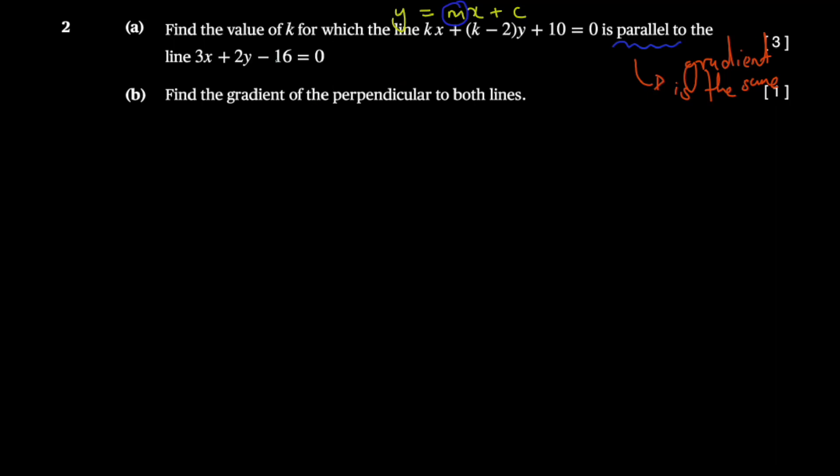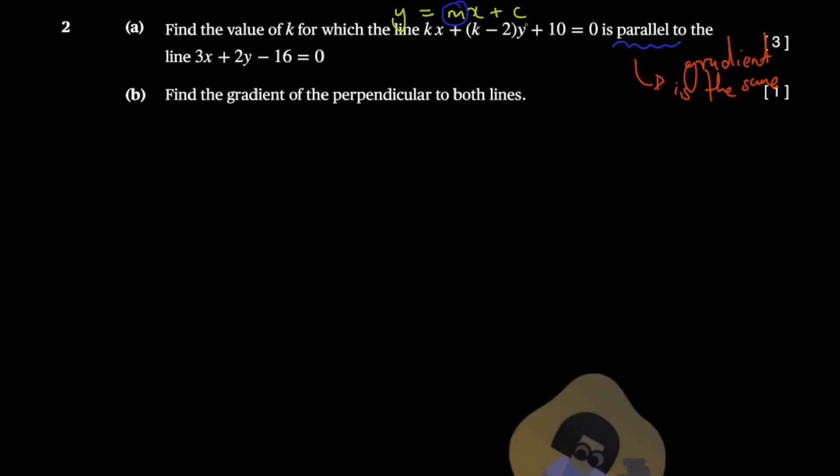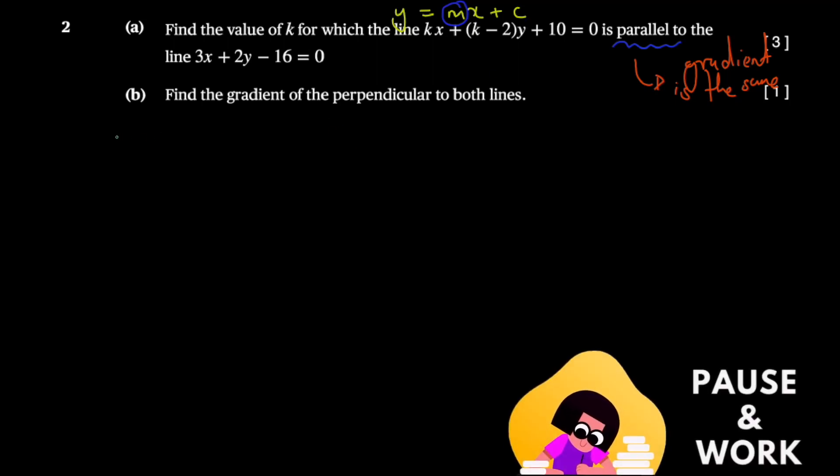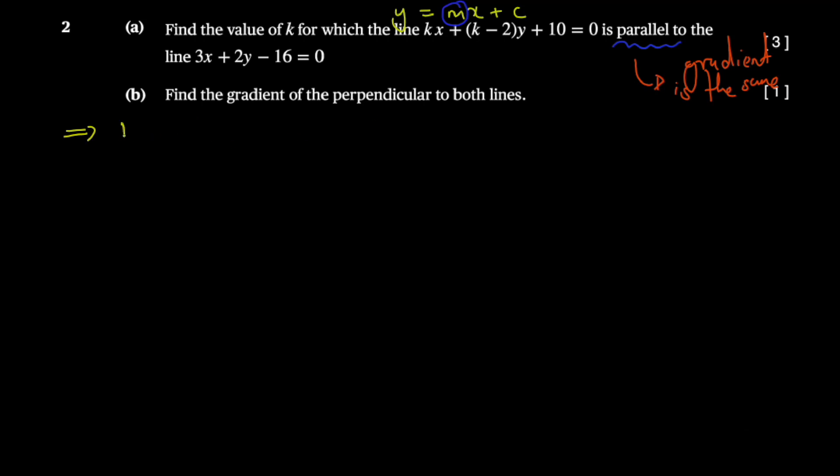For the first line, I'm actually going to skip a step a bit and arrange it as quickly as possible. So you get (k - 2)y = -kx - 10, because this kx is going to the other side and this plus 10 is also going to the side.